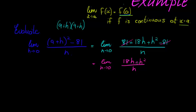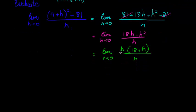So I can take out an h, so that my limit now becomes h times 18 plus h over h. Here I see my h's can cancel.